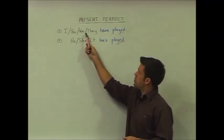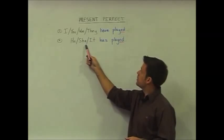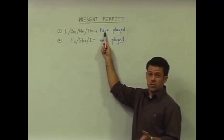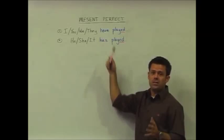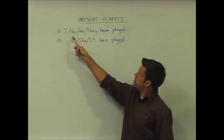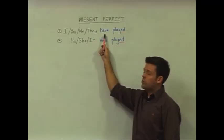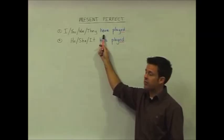again, our subjects here and here, our auxiliary verb or our helping verb. In this case it's to have. For subjects I, you, we, and they, we leave the auxiliary verb as have.